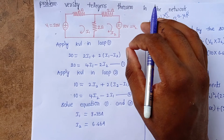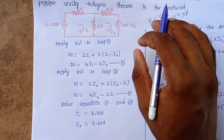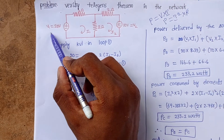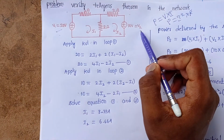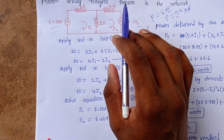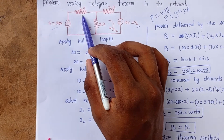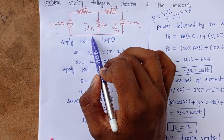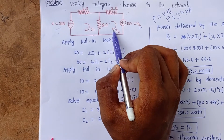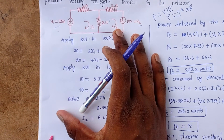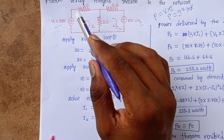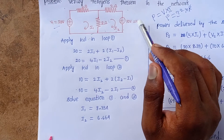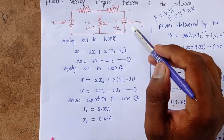Observing the circuit, we have two voltage sources V1 and V2, and three resistors each of 2 ohms. The current flowing through the first loop is I1 and through the second loop is I2. We need to find the power delivered by each source and add them to get total power delivered.